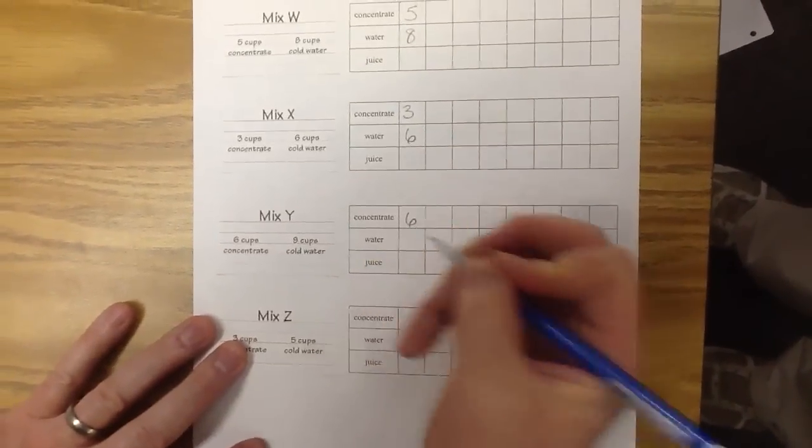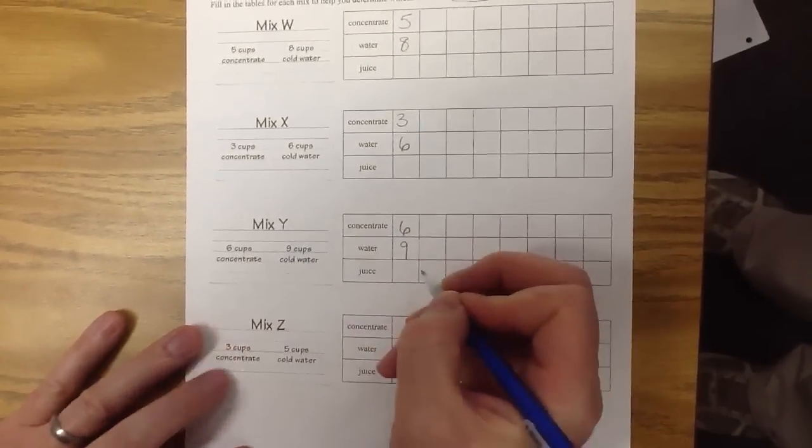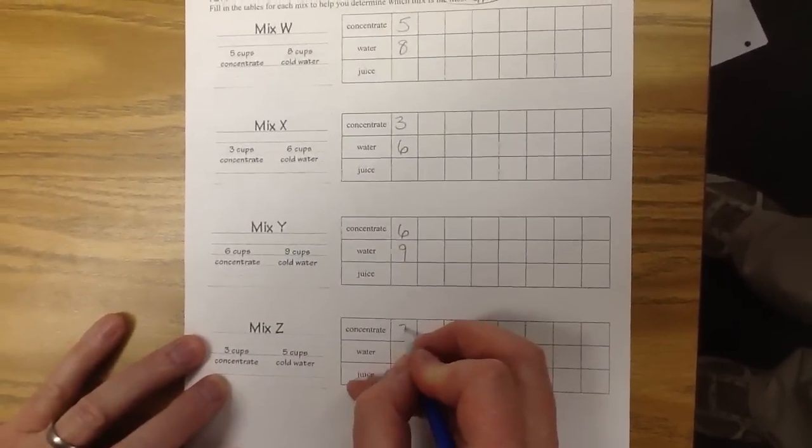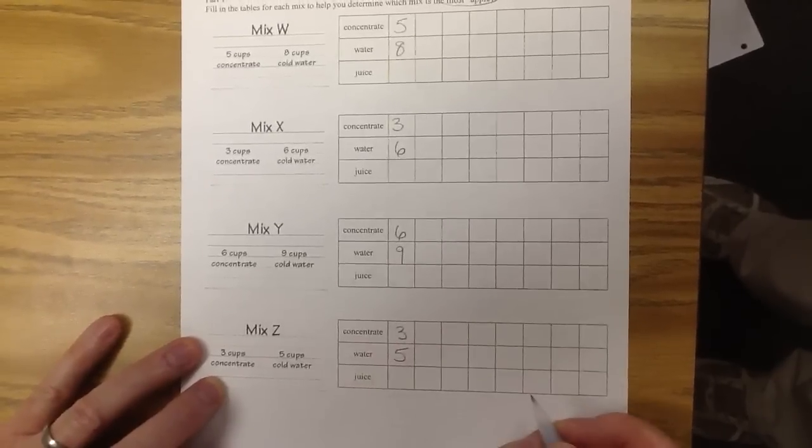Mix Y, 6 cups of concentrate, 9 cups of water. And mix Z had 3 cups of concentrate, 5 cups of water.